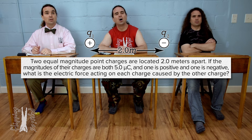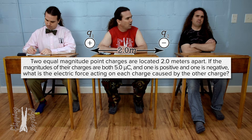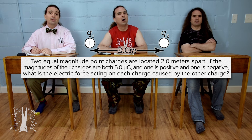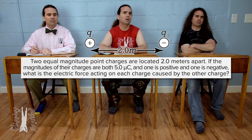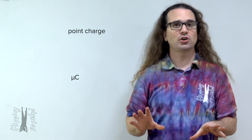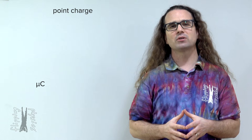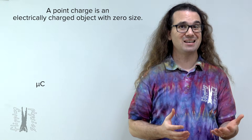Let's do a basic example problem. Two equal magnitude point charges are located 2.0 meters apart. If the magnitudes of their charges are both 5.0 microcoulombs, one positive and one negative, what is the electric force acting on each charge caused by the other charge? A point charge is just like a point mass, only the description has to do with charge rather than mass — an object which has zero size and carries an electric charge.